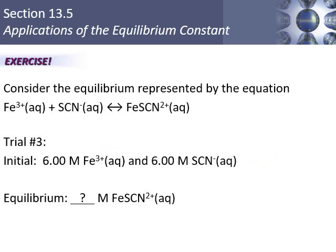Another set: starting with Fe³⁺ = 6, SCN⁻ = 6, FeSCN²⁺ = 0. The change is 3: add 3 to the product and subtract 3 from each reactant. Equilibrium: FeSCN²⁺ = 3, Fe³⁺ = 3, SCN⁻ = 3. Check: 3 / (3 × 3) = 3/9 = 1/3. Correct.